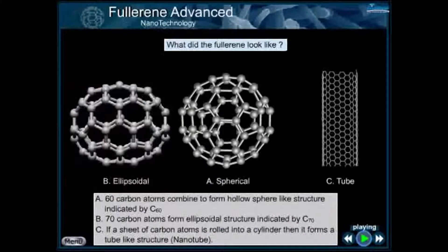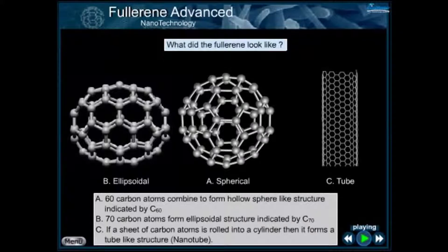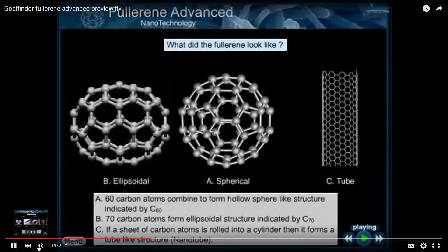60 carbon atoms combine to form a hollow sphere-like structure, indicated by C60. 70 carbon atoms form an ellipsoidal structure, indicated by C70.